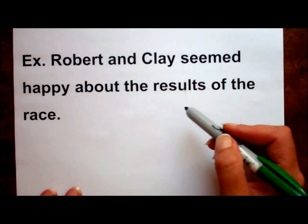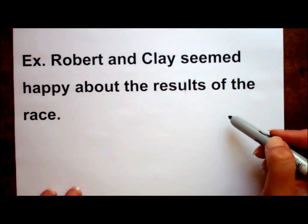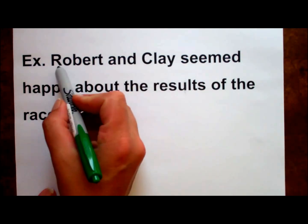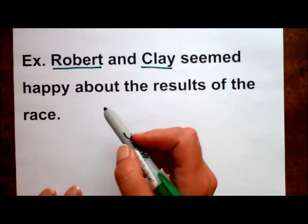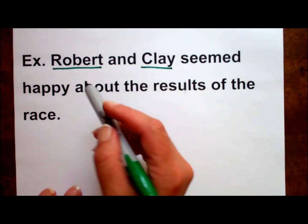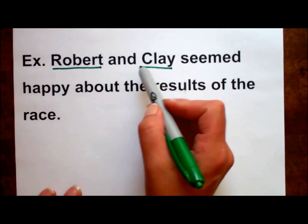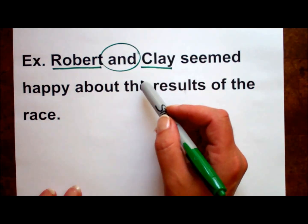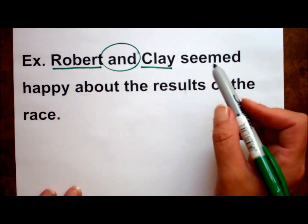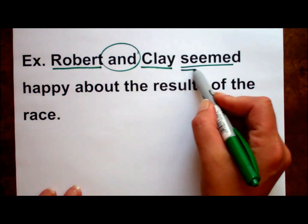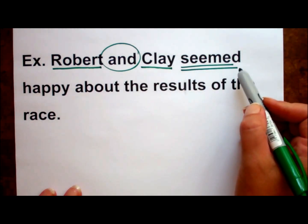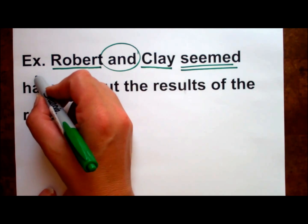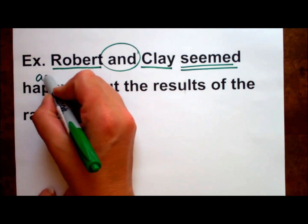Robert and Clay seemed happy about the results of the race. Robert and Clay is the compound subject — they are joined by that coordinating conjunction and. Seemed is the linking verb, and happy is an adjective. We have another predicate adjective.